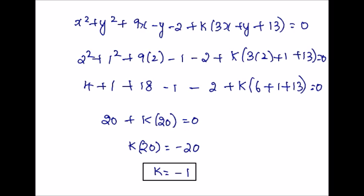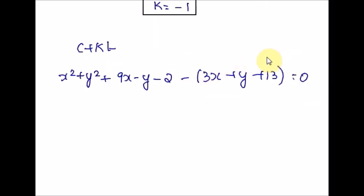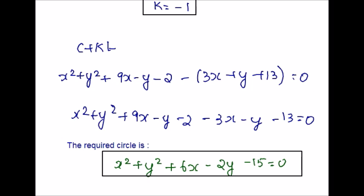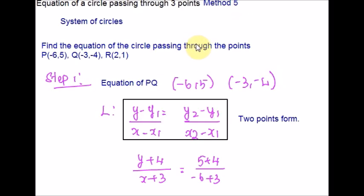With k = negative 1, we plug it back into C + kL, distributing the negative sign to the last parenthesis and combining like terms. This gives us the equation of the circle passing through R. This method is straightforward but different from previous methods. Using the two-point formula with points P and Q to find the equation of PQ, we plug in all values, simplify, and let that be equation number 1.